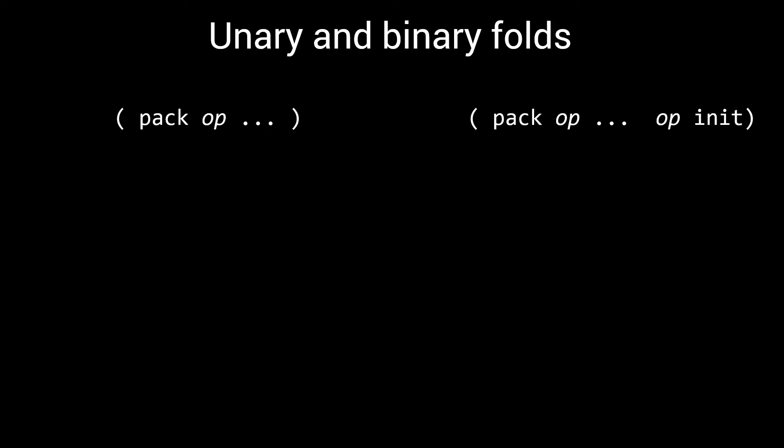A unary fold has a single operator. A binary fold allows you to also pass an initial value, and is written using two occurrences of the same operator.